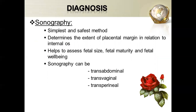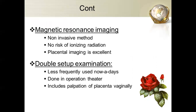The exact diagnosis for placenta previa is sonography — the simplest and safest method — where we can determine how far the placental margin extends, fetal size, fetal maturity, and fetal well-being. MRI can also be done. Double set-up examination is no longer used because vaginally palpating the placenta is very risky.